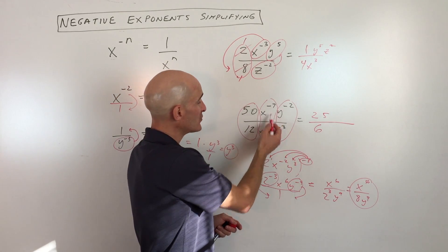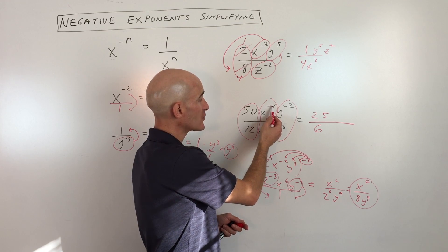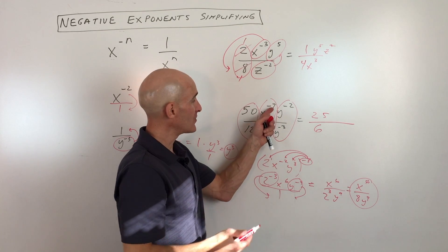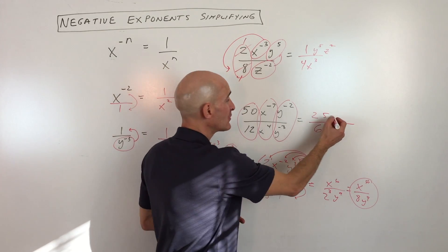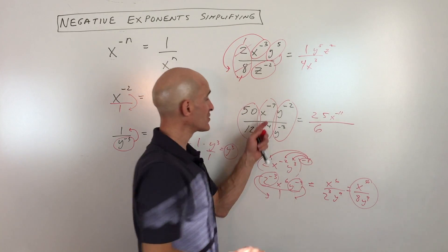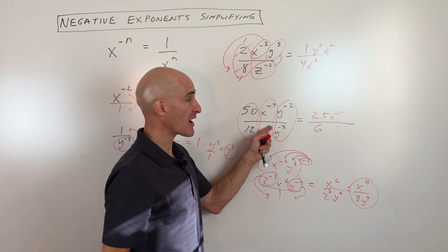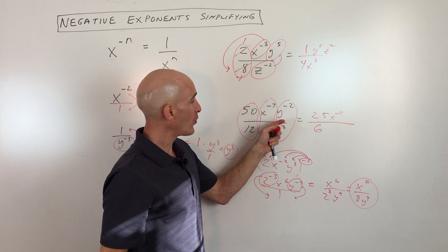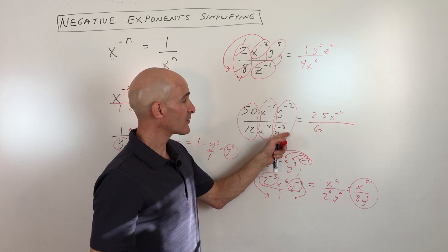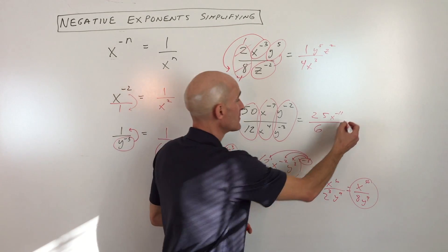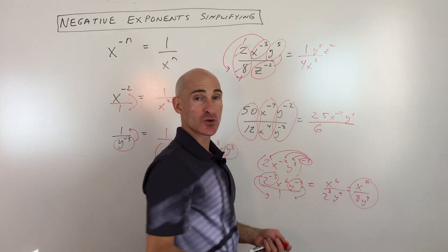Now here when you divide, you subtract. So you take the numerator's power minus the denominator's power. So negative 7 minus 4, which is negative 11, and you put that result in the numerator. So this is the quotient rule. When you divide, you subtract the exponents. Same thing here with the y's. Negative 2 minus negative 3 is like adding 3, so that's going to be y to the first.